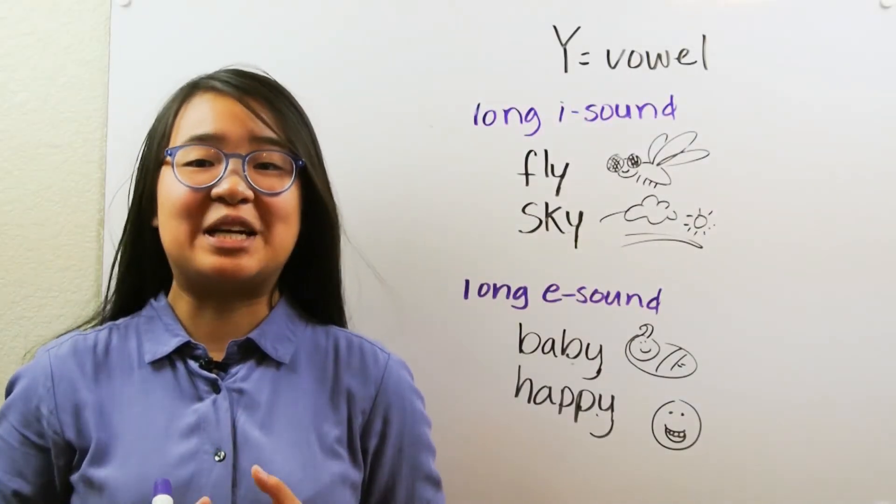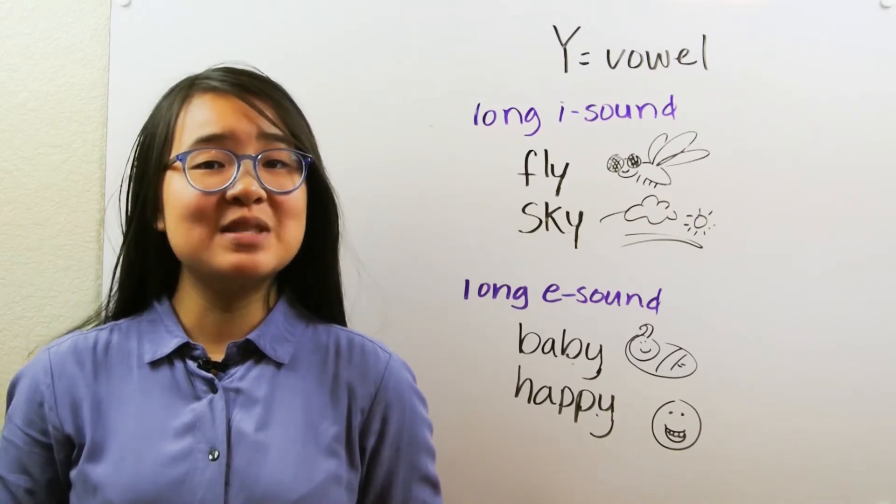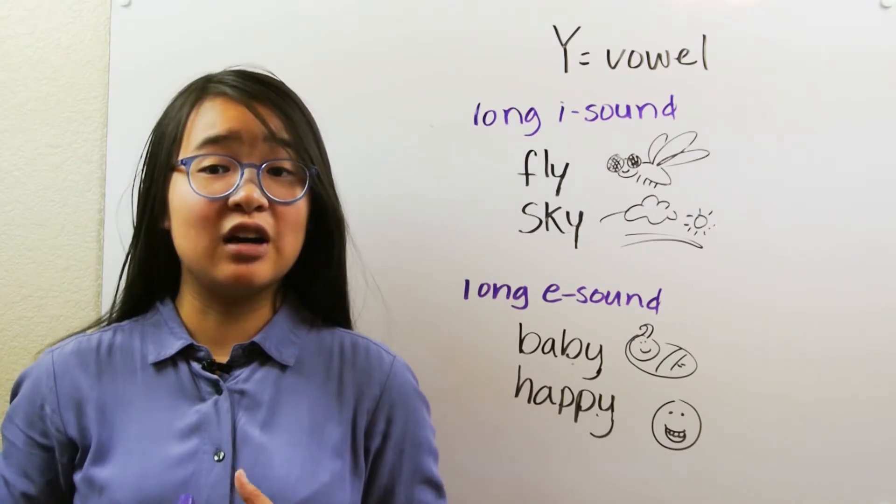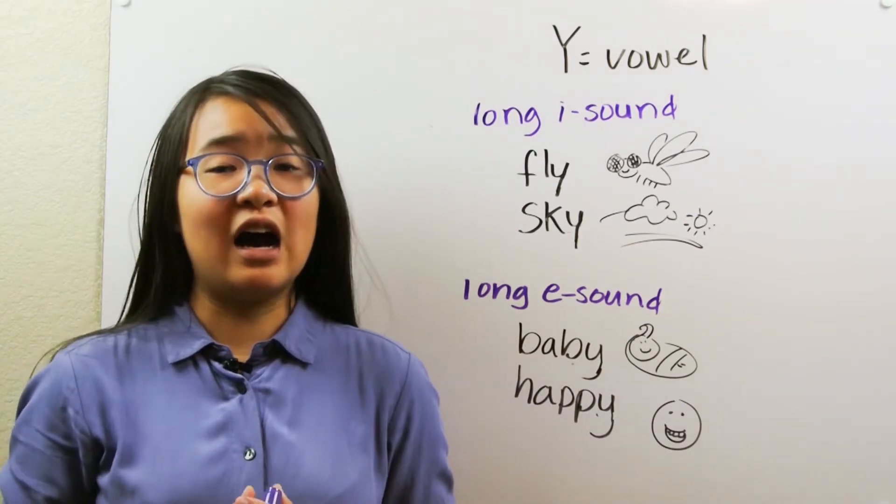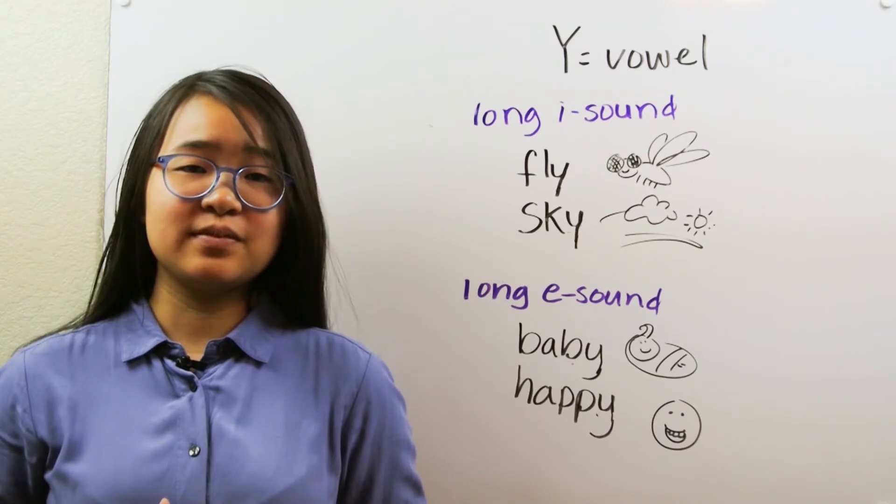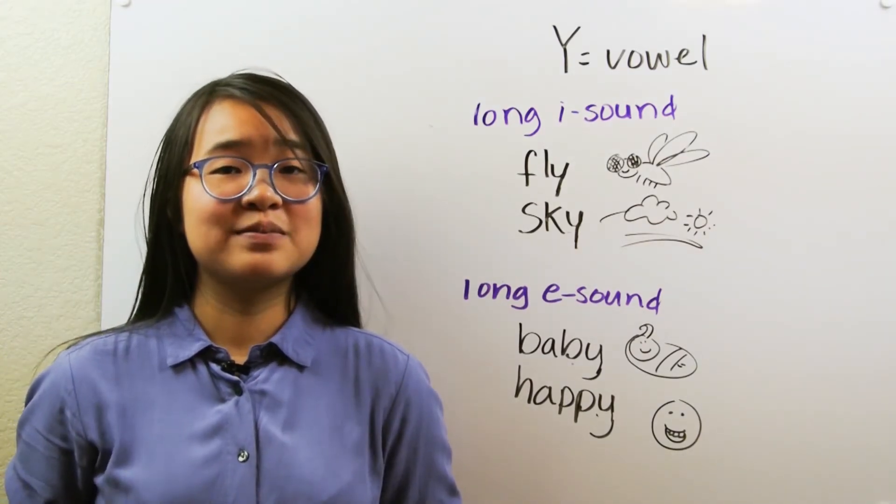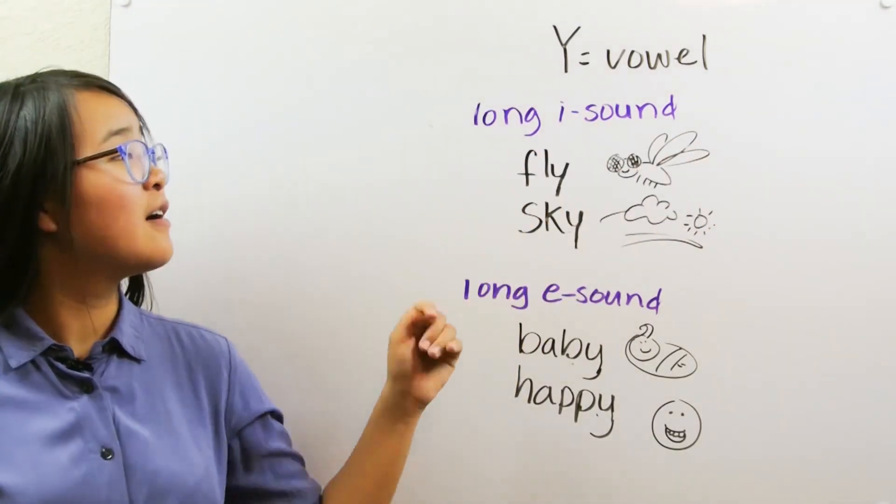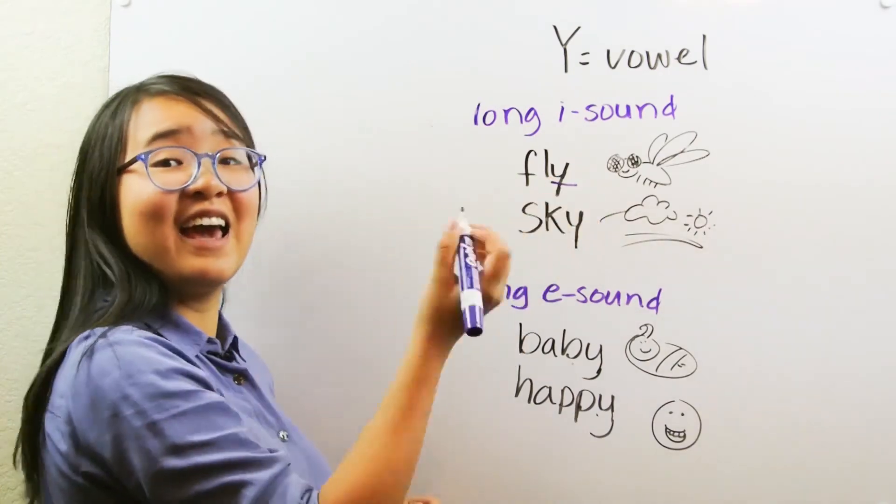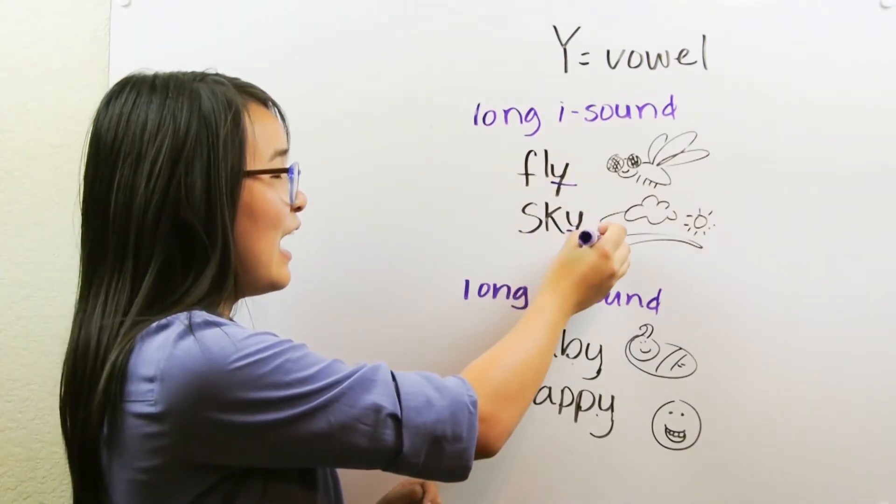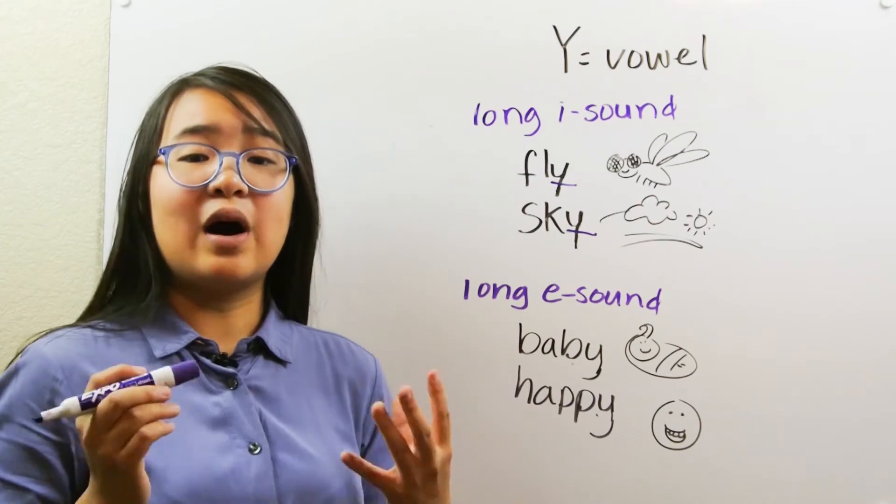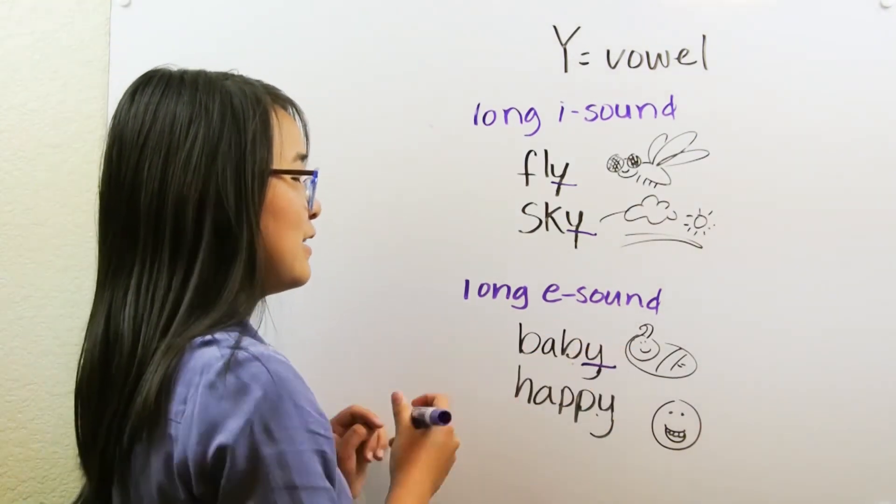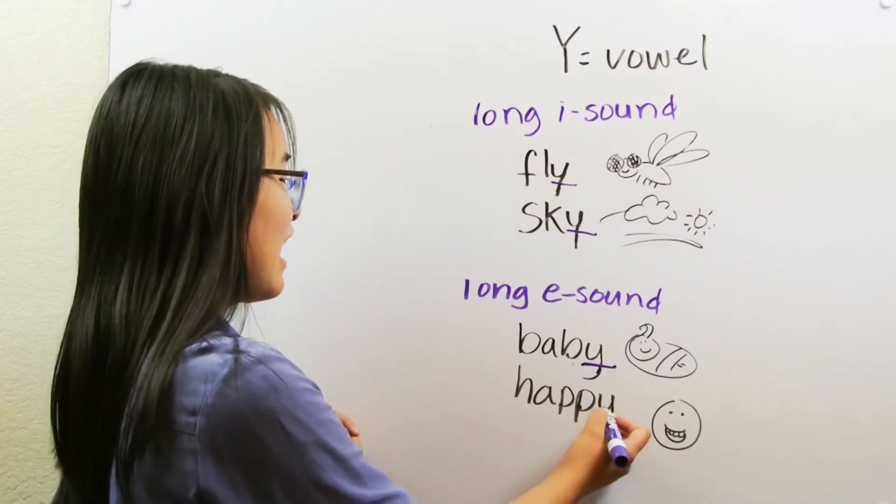Now, let's look at the tricky letter Y. Sometimes it acts like a vowel. When the letter Y is a vowel, it makes either the long E sound or the long I sound. Here are some examples. Words where Y makes the long I sound are fly and sky. Words where Y makes the long E sound are baby and happy.